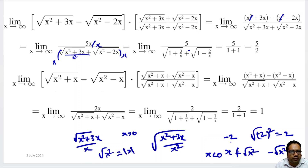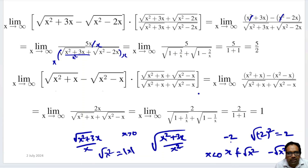So what will be left? We will be left with 5 in the numerator divided by the denominator, which becomes square root of 1 plus 3 over x plus square root of 1 minus 2 over x. As x tends to infinity, 3 over x and 2 over x both tend to 0. So we get 5 over (square root of 1 plus square root of 1), that is 5 over 1 plus 1, which equals 5 over 2.